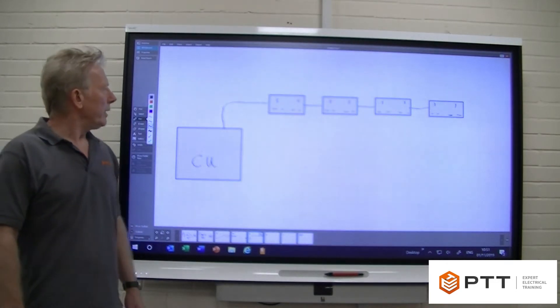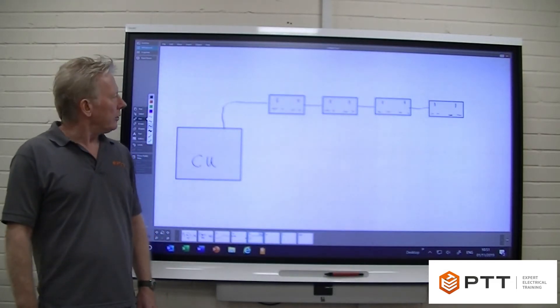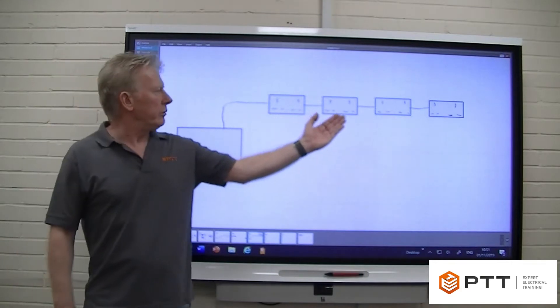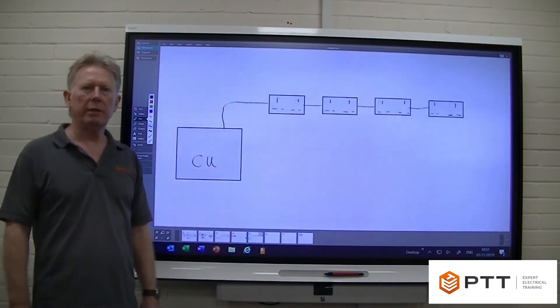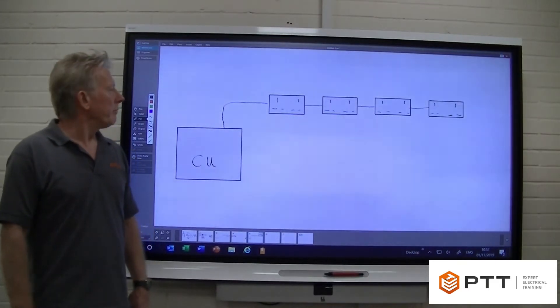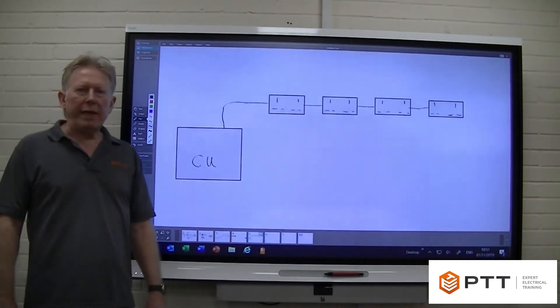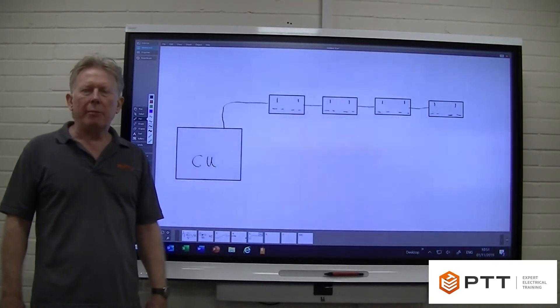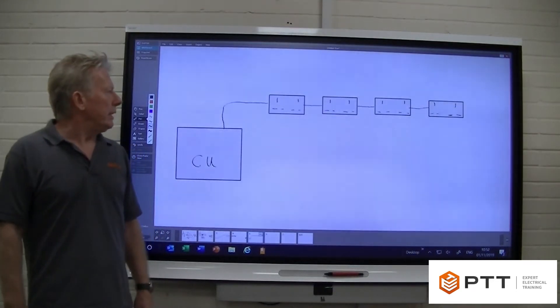I just wanted to start off by talking about a standard radial circuit. I've just drawn a simple radial circuit here which we could, if we wish, protect with a 20 amp type B circuit breaker. Now 2.5, 1.5 flat twin and earth can actually take up to 27 amps, and so obviously a B20 in this particular instance is perfectly adequate for protecting that cable.